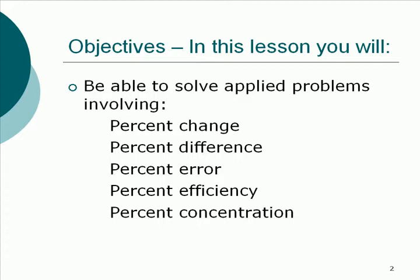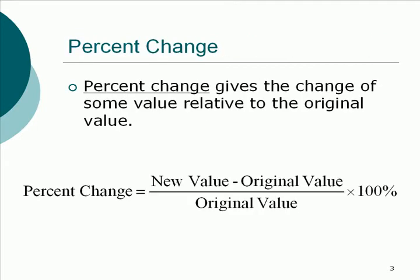The first one we want to look at is percent change. We looked at one similar to this yesterday. The percent change gives the amount of change relative to the original value. The example we used was the price of gas — if the price of gas goes up 100%, that means it goes up all of its current value; it's in reference to what we have right now. All of the formulas you see on the slides here are in your textbook on about page 48 or 49. There's only one that's not, and I'll make sure to point that out when we get to it.